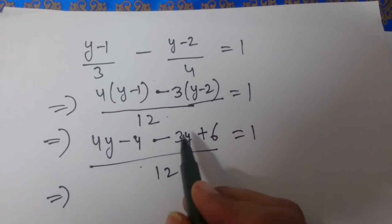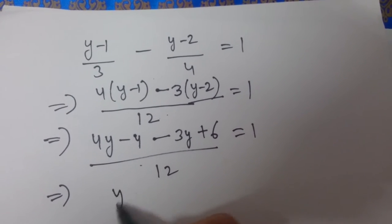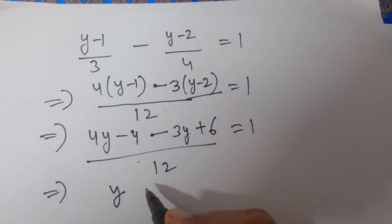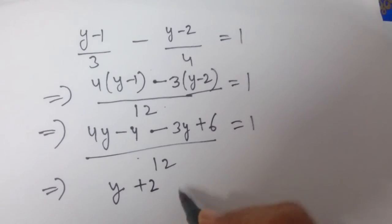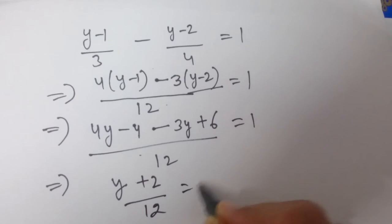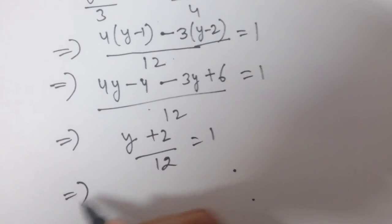This implies 4y - 3y is y, minus 4 plus 6 is plus 2, divided by 12 equals 1.